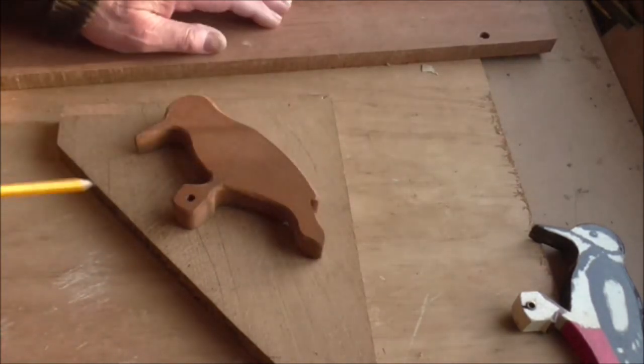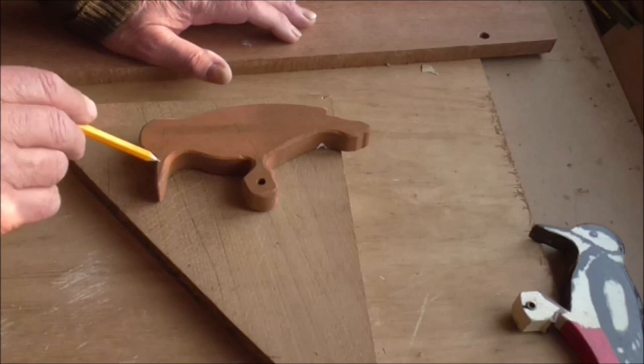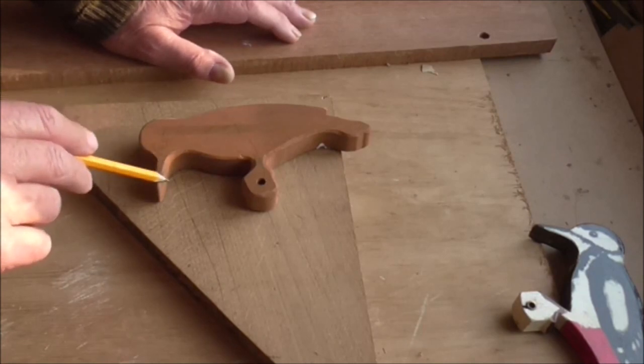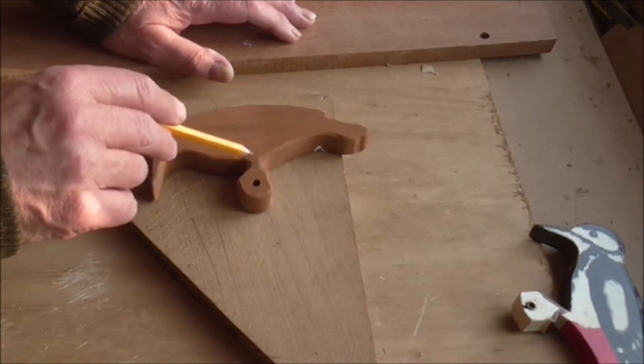Now, to also take into consideration is the grain. On this particular creature here, the woodpecker, he's got a long pointed beak and that has a tendency to snap off, being the thinnest part, and the same there.